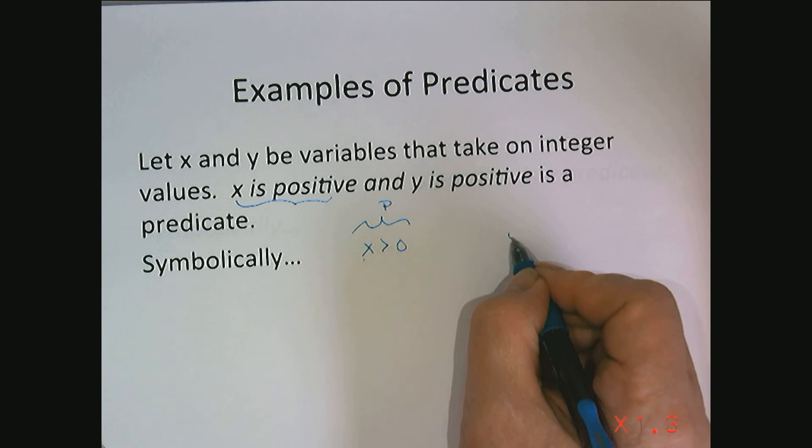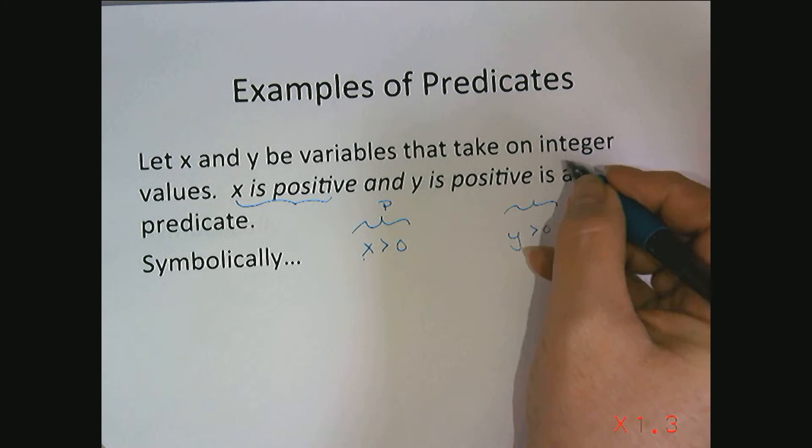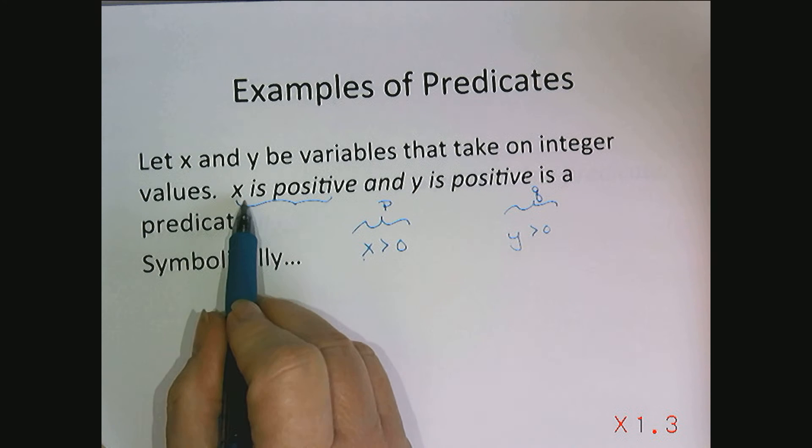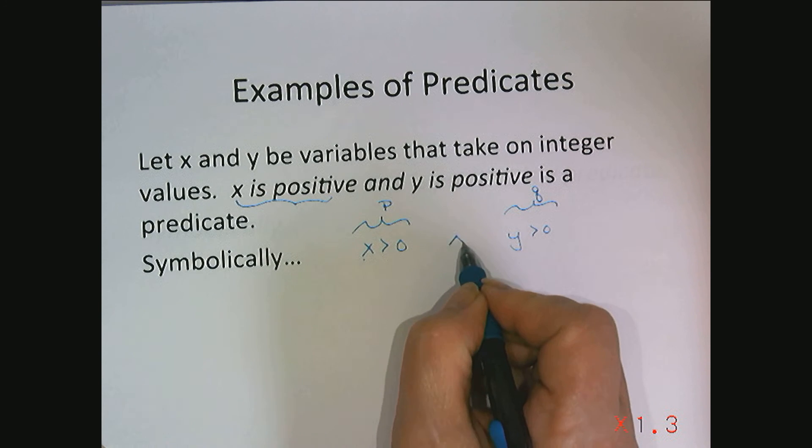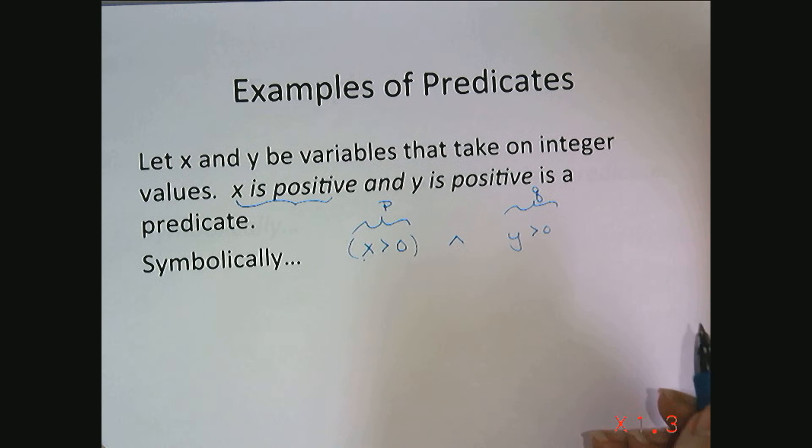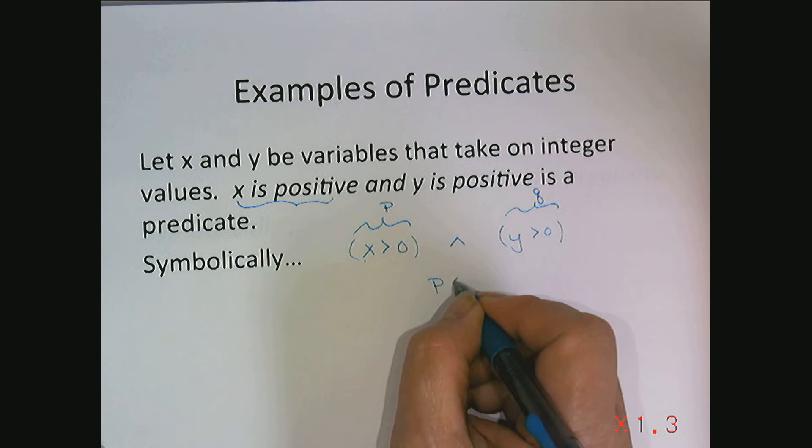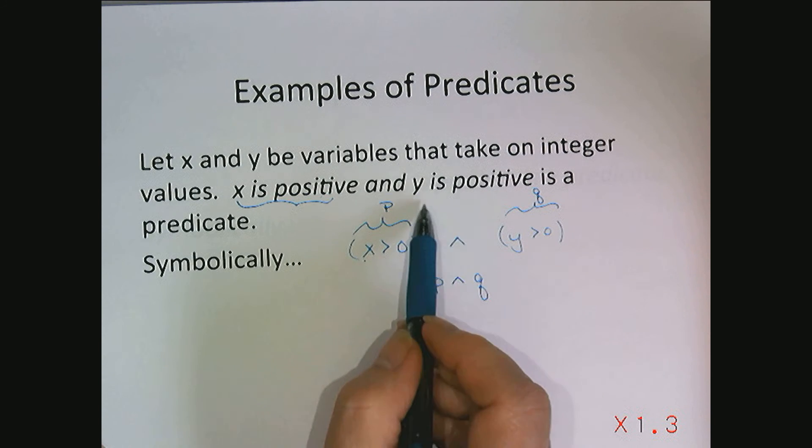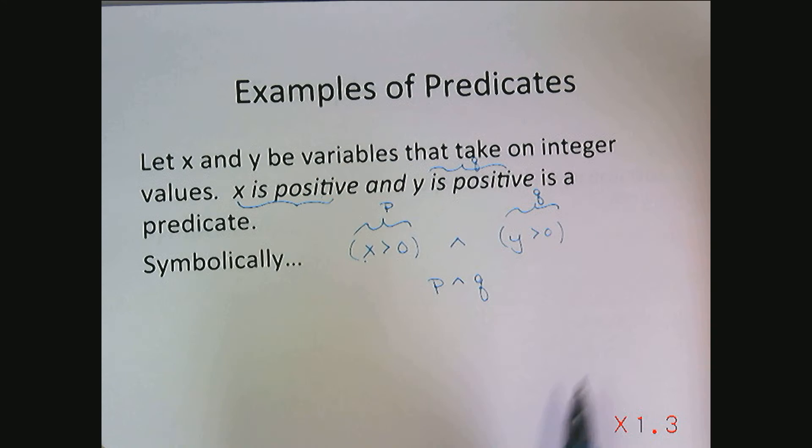Same thing, y is positive we could describe as the predicate q. If we want to look at x is positive and y is positive we could write it as x is greater than zero and y is greater than zero or we could say p and q where p is x is positive and q is y is positive.